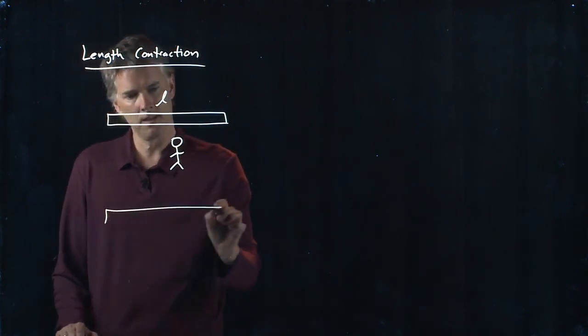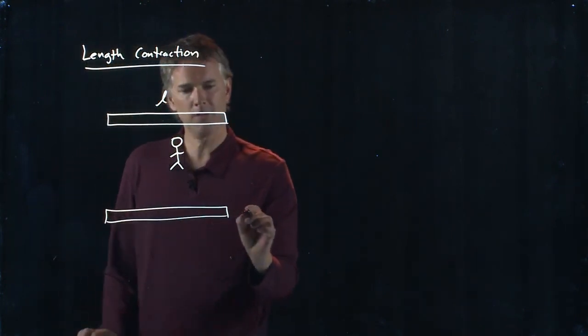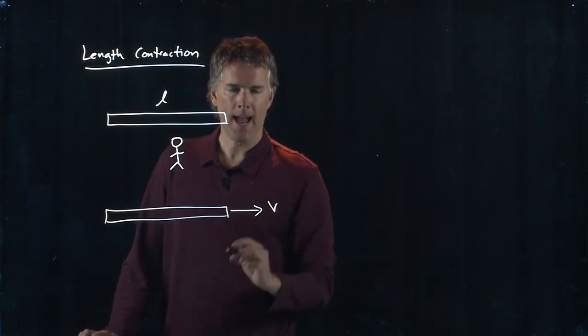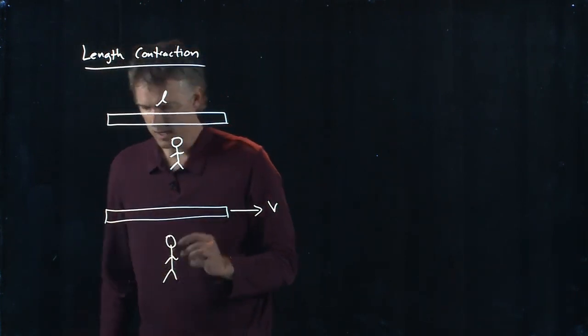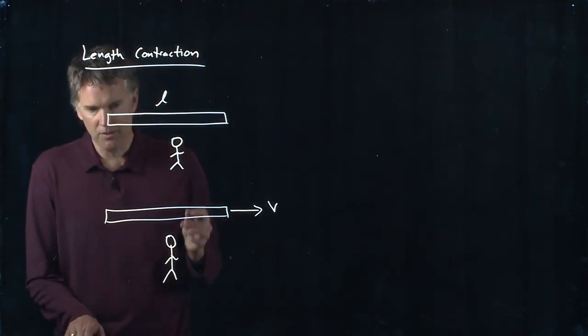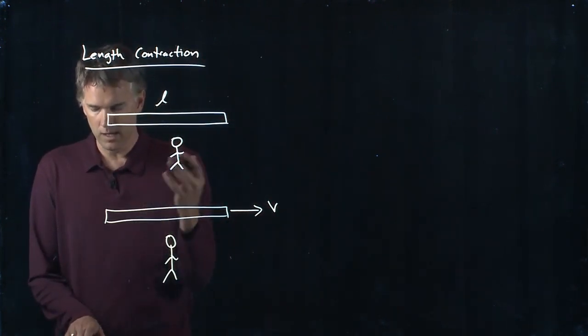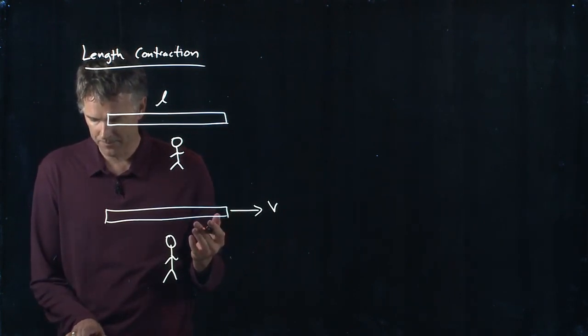If the stick is zooming past you at some speed V, you get a different measurement. And the scaling between those two is our good old factor gamma.